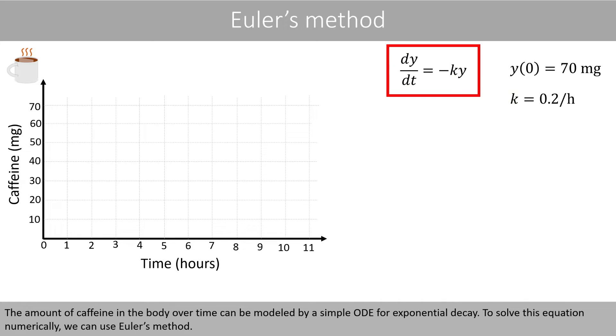The amount of caffeine in the body over time can be modeled by a simple ordinary differential equation for exponential decay. To solve this equation numerically, we can use Euler's method.